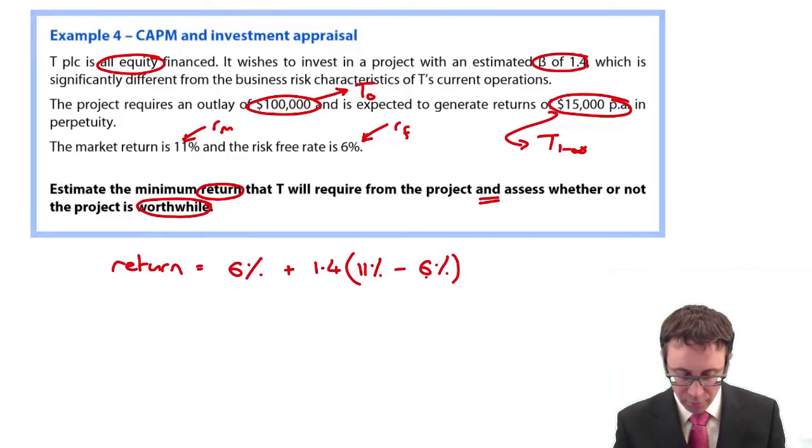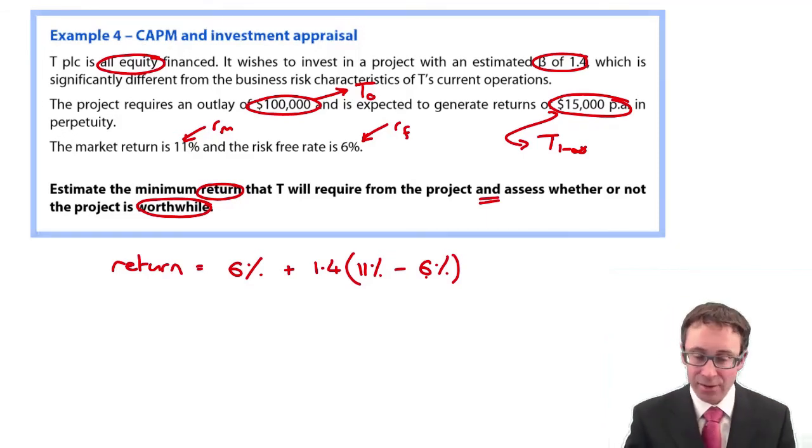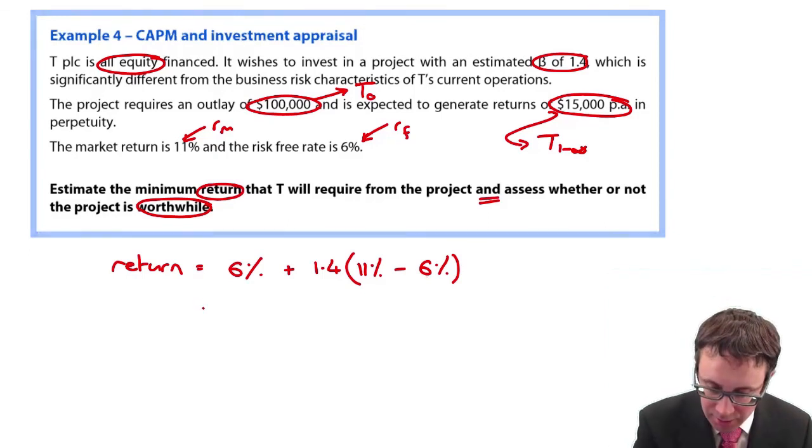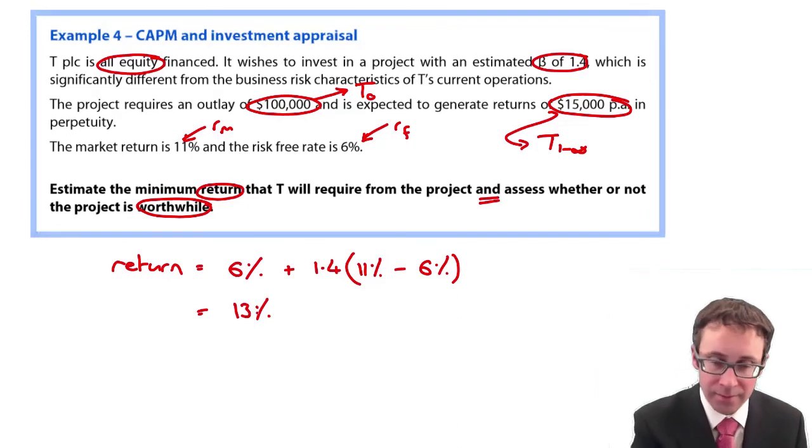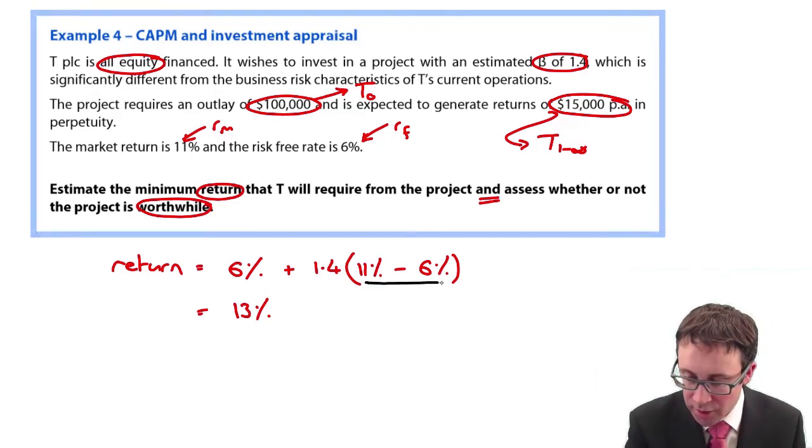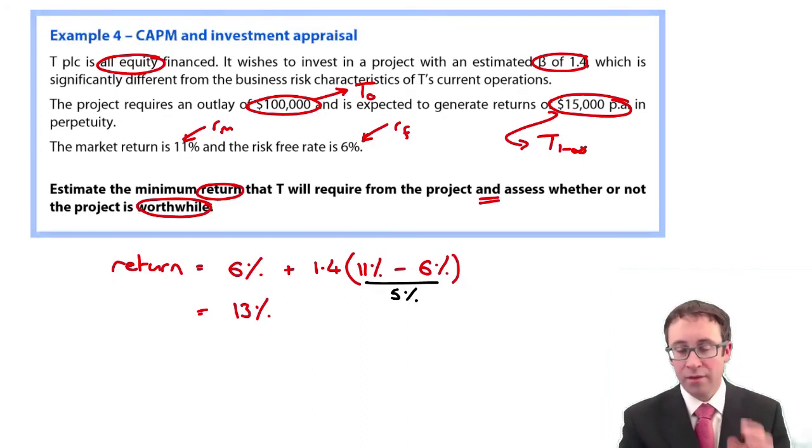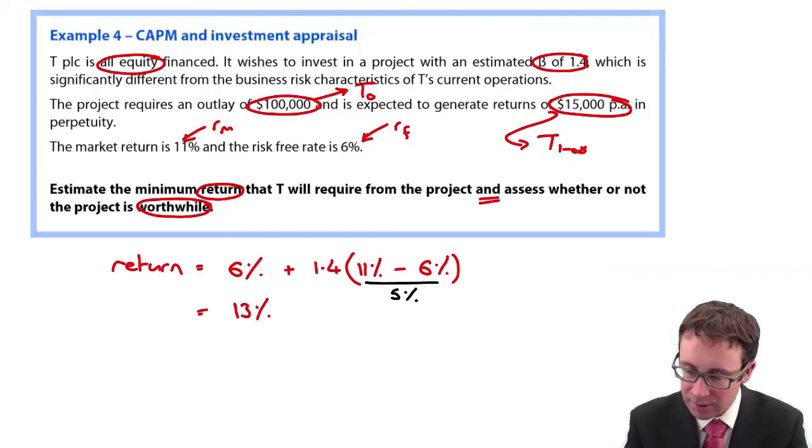11 less 6. Last time I checked, was there, was it 5? 5 times 1.4 is there as 7. And 7 plus 6 is there as 13, isn't it? So your risk premium is 5%. 5 times 1.4 is 7. Add the 6, that's 13, isn't it?